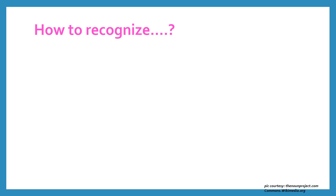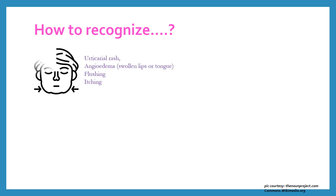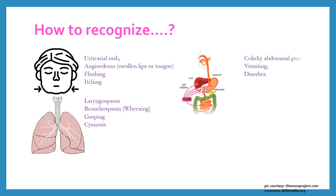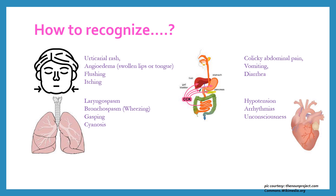Symptoms in decreasing order of frequency are: cutaneous like urticarial rash, angioedema, flushing and itching; respiratory like laryngospasm, bronchospasm manifested as wheezing, gasping and cyanosis; abdominal like colic abdominal pain, vomiting, diarrhea; and cardiovascular like hypotension, arrhythmias and unconsciousness.